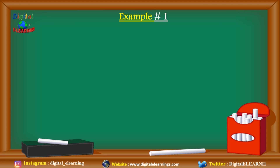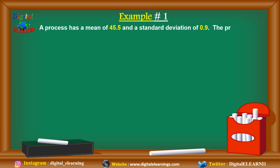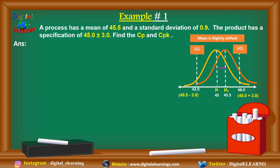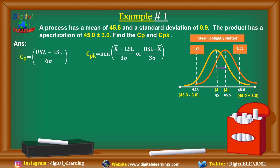Let's take the first example. A process has a mean of 45.5 and a standard deviation of 0.9. The product has a specification of 45 ± 3. We need to find cp and cpk. The lower specification limit is 45 − 3 = 42 and the upper specification limit is 45 + 3 = 48. Note the process mean of 45.5 is slightly shifted from the specification center of 45. For cp: (48 − 42) / (6 × 0.9) = 6 / 5.4, which gives cp = 1.11.